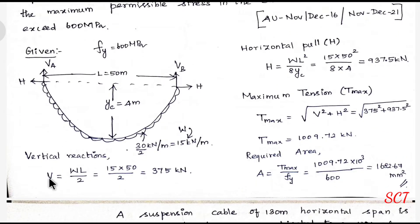First, the vertical reaction V equals WL by 2. The W value is 30. Since there's a pair of cables, we divide by 2, so one cable carries 15 kilonewtons per meter. Multiplying 15 by 50 gives us 375 kilonewtons.